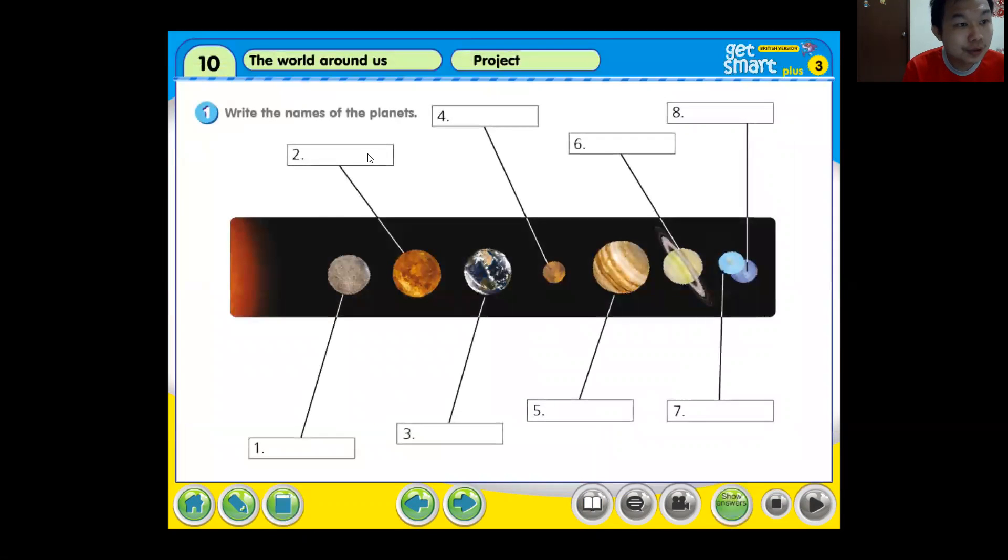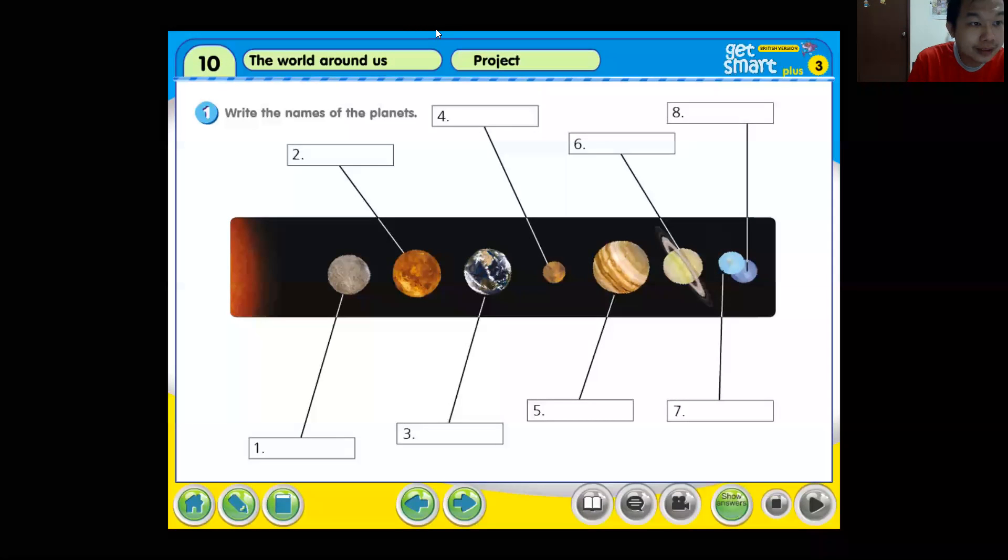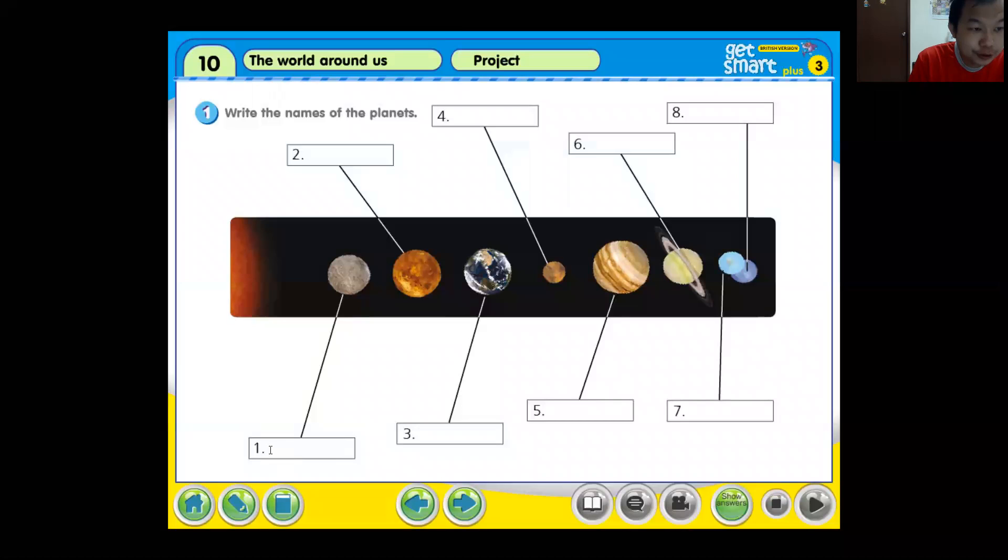The project is write the names of the planets. So you have to write the names. Let's start now. Boys and girls, I know year three you already learned this solar system, maybe in your mother tongue like Chinese or Malay. But now it's time for us to learn English. So the first one will be Mercury. Remember the first letter should be capital letter.